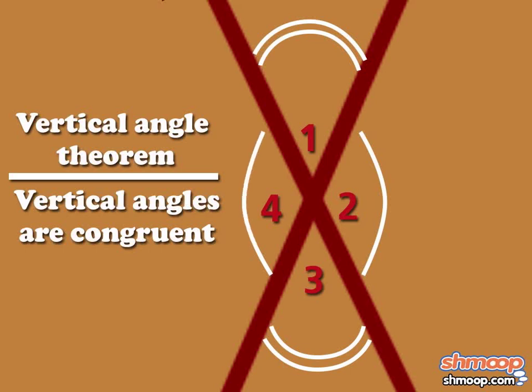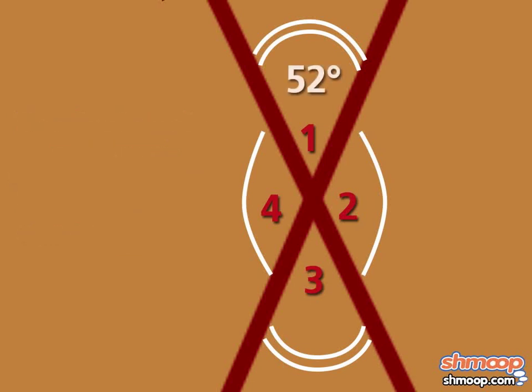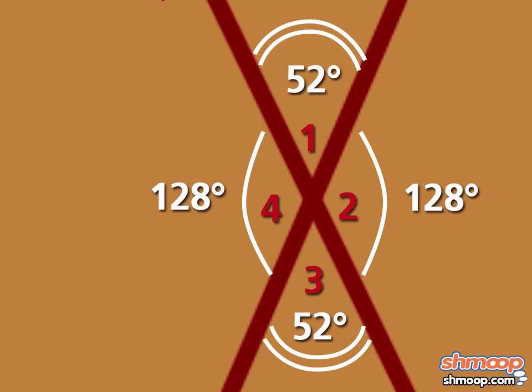Is this true? Here we have two pairs of vertical angles. The top and bottom, each measuring 52 degrees. And on the right and left, each measuring 128 degrees. So yes, vertical angles, even if they're horizontal, are congruent.